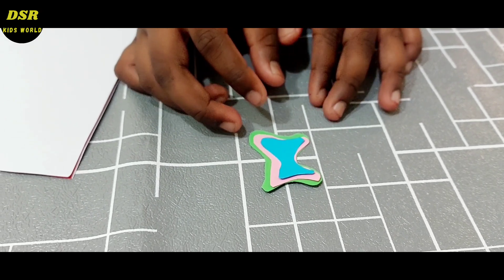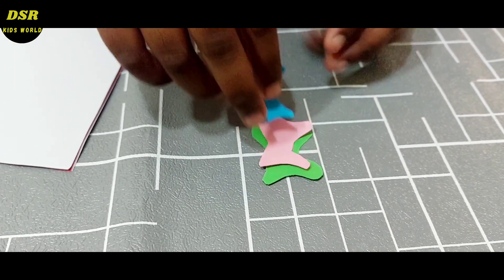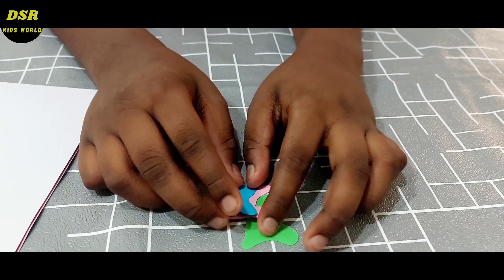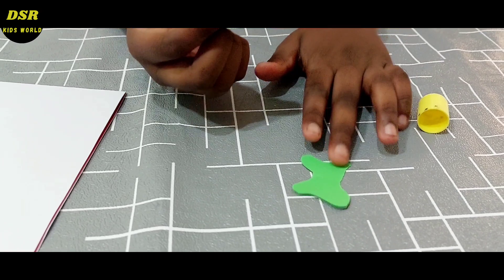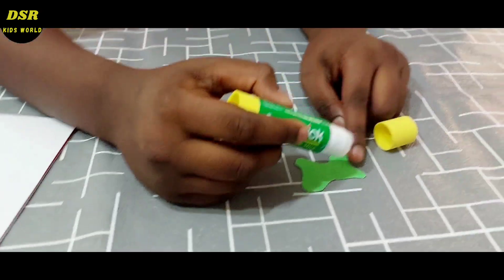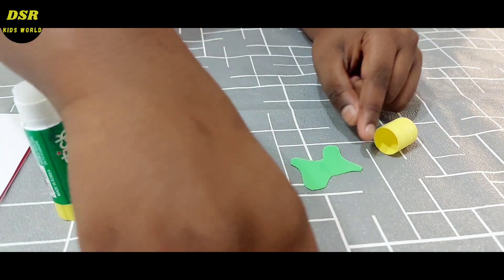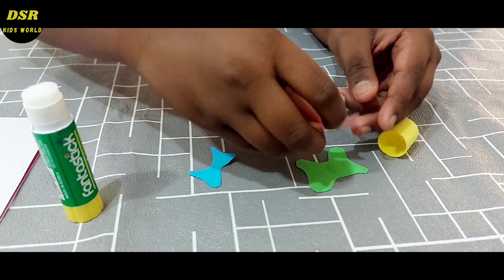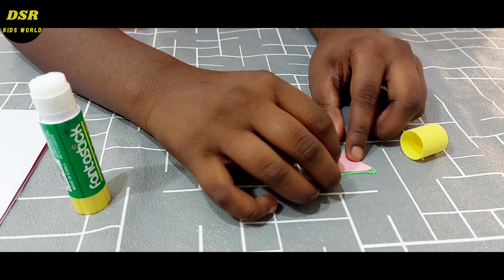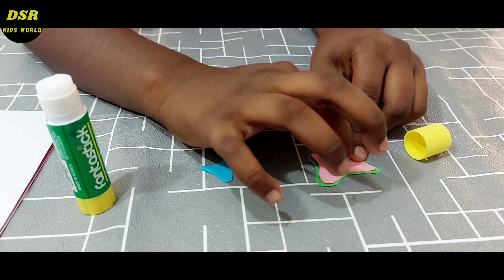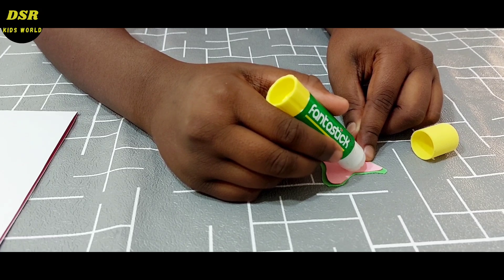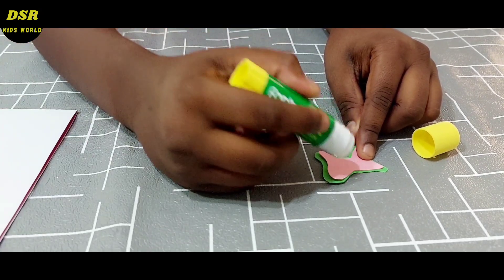Now, this is how our butterfly looks like. We have to take one of these and stick glue over here and stick it here.